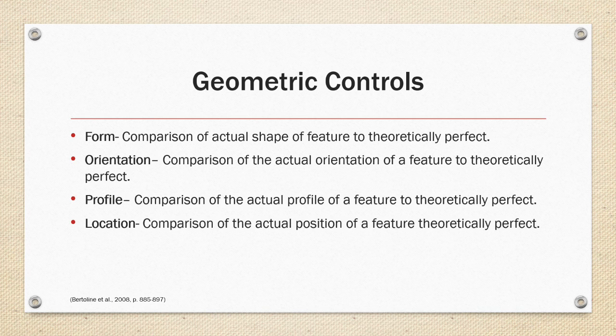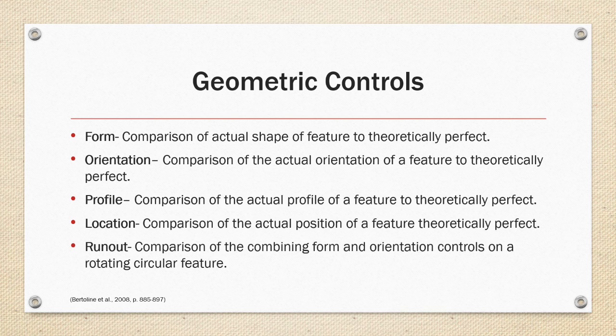We'll also cover location, which is a comparison of the actual position of a feature to theoretically perfect position, and runout, the comparison combining form and orientation controls on a rotating circular feature as compared to a perfect circular feature.